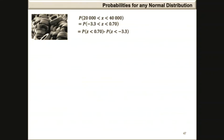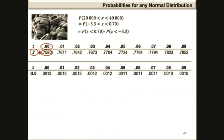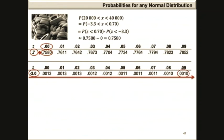Using our z-tables, the probability of z less than 0.7 is 0.7580. For the probability that z is less than minus 3.3, as z values become smaller on the negative side the probability goes towards 0. Therefore, our final answer is approximately 0.7580 minus 0, which equals 0.7580.